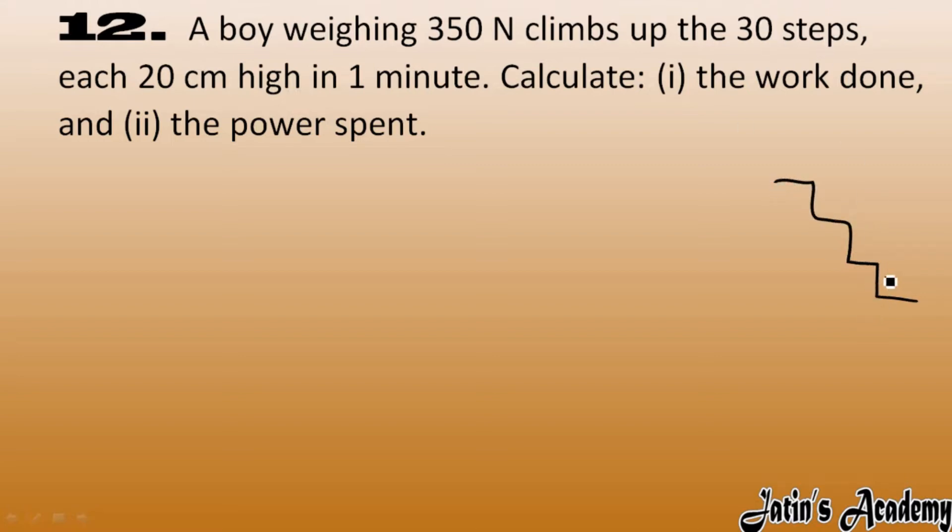One step is 20 centimeters high. Total steps we have: 30. So what is the total height? We have 30 steps, one step is 20 centimeters, so 600 centimeters. Convert it into meters, divide by 100, we get 6 meters as the height.